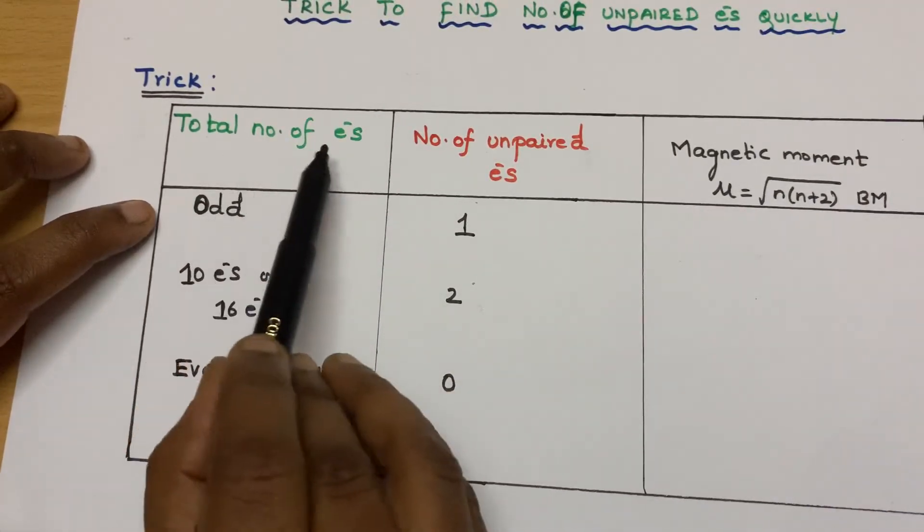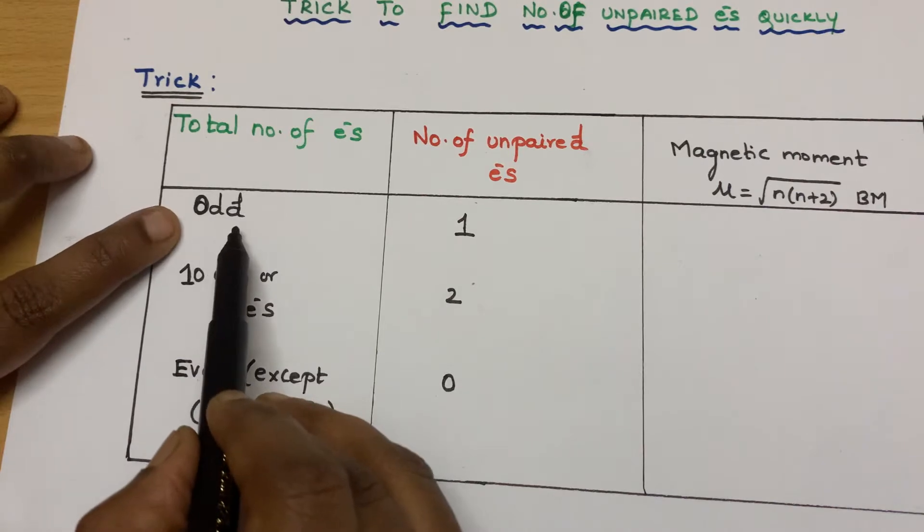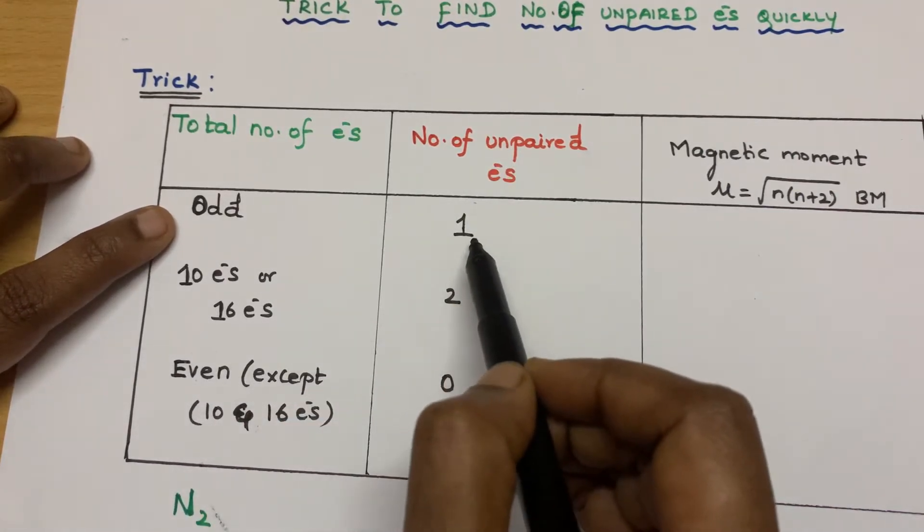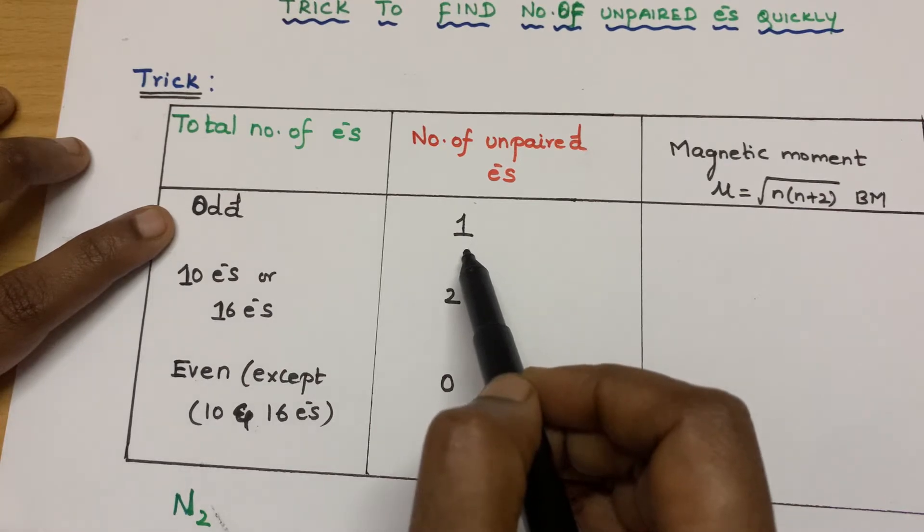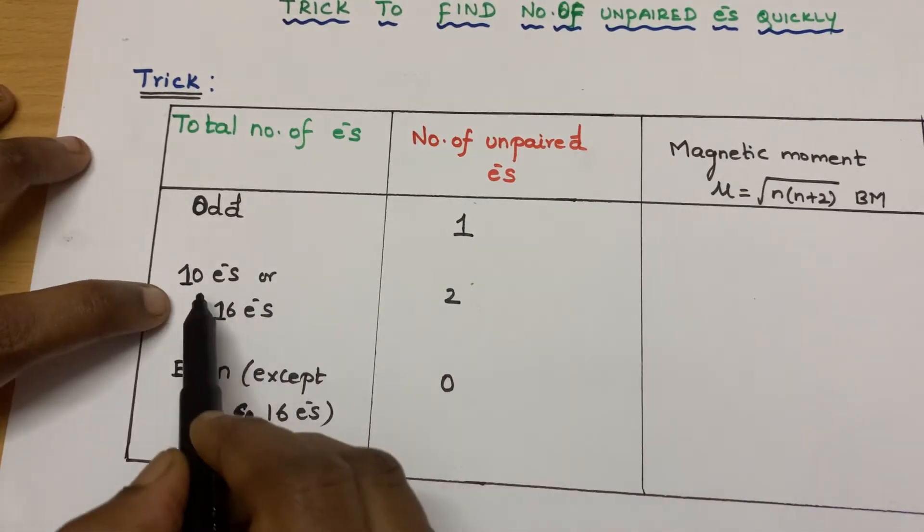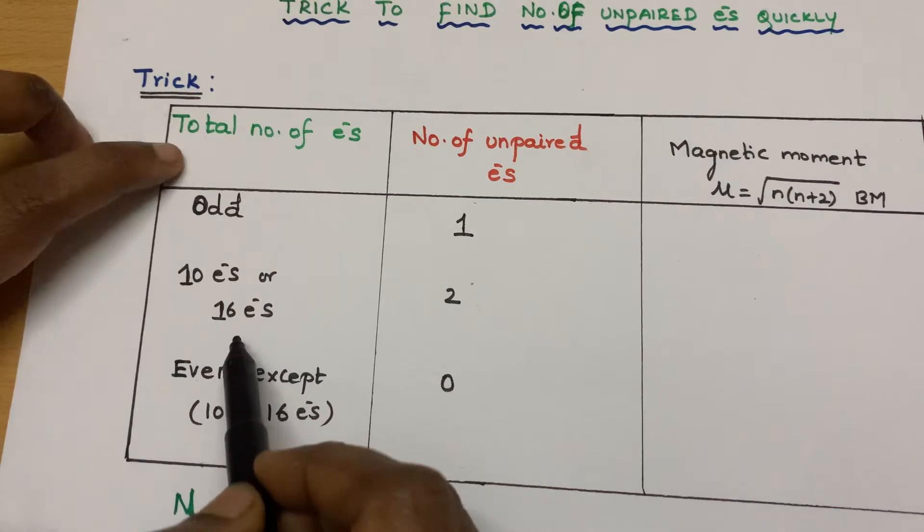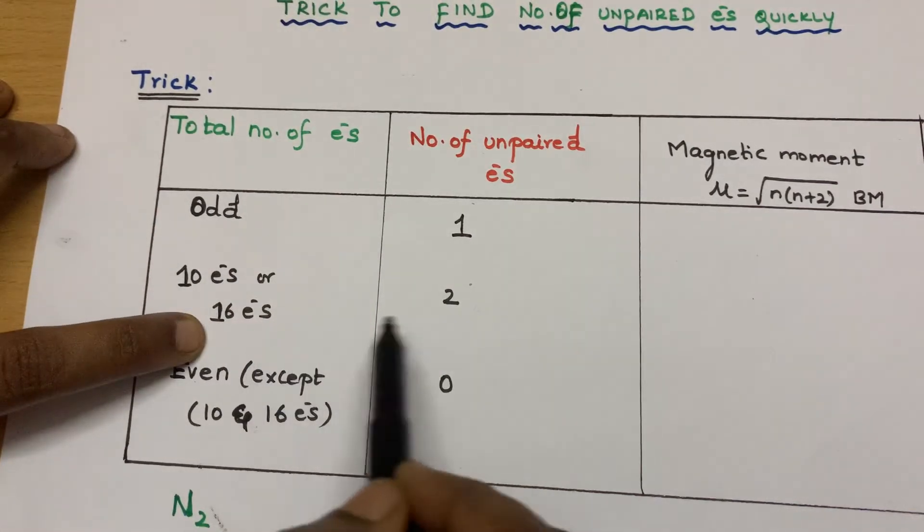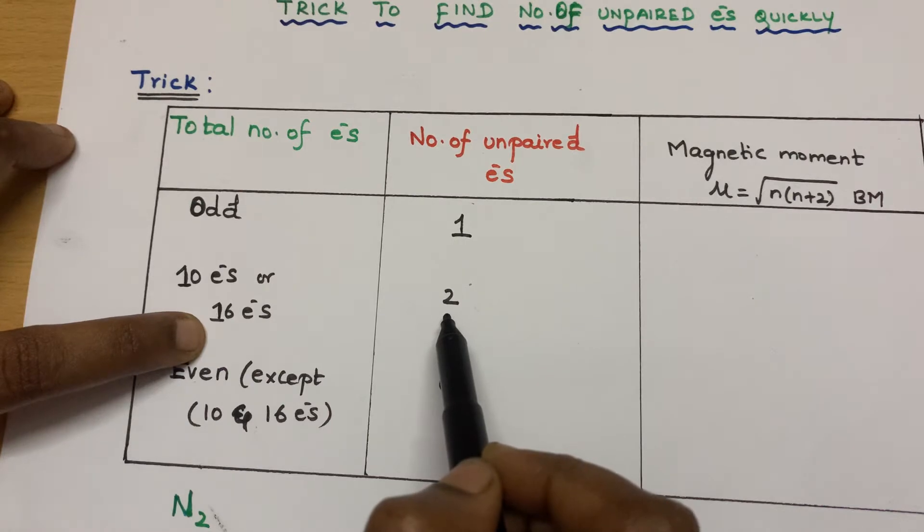So the total number of electrons, if it comes to be any odd number, then it surely will be having one unpaired electron. Then if it has 10 electrons or 16 electrons, if the total number of electrons of the species comes to be 10 or 16, then it will have two unpaired electrons.